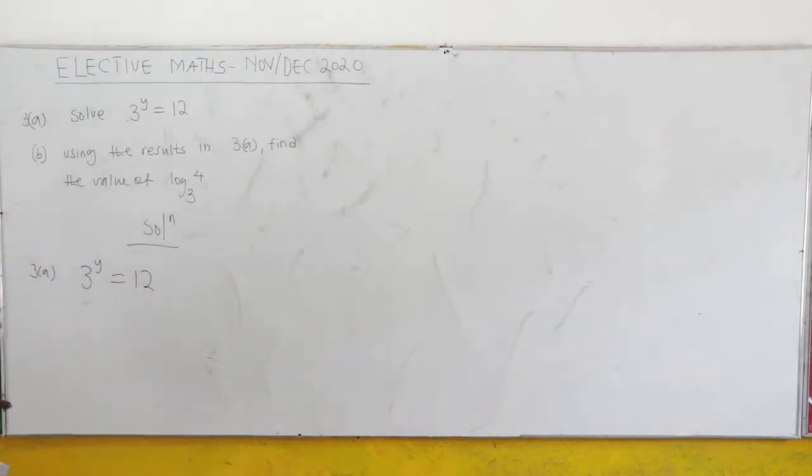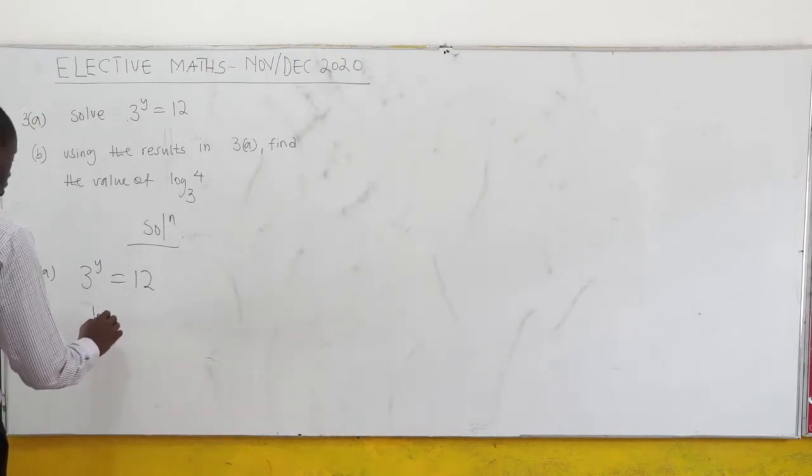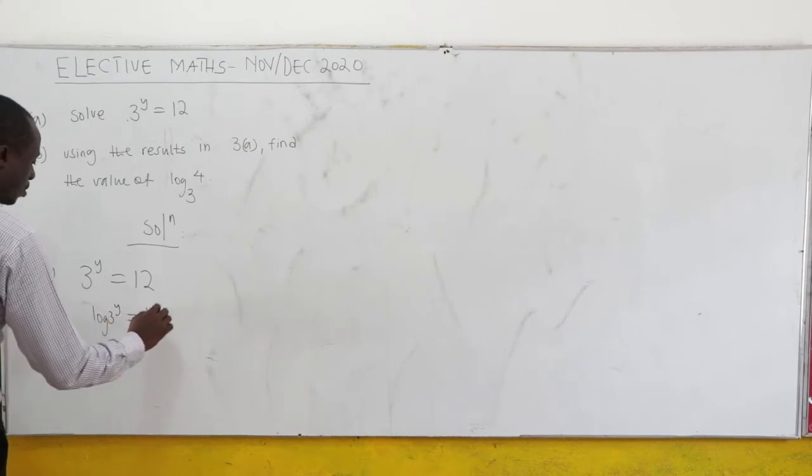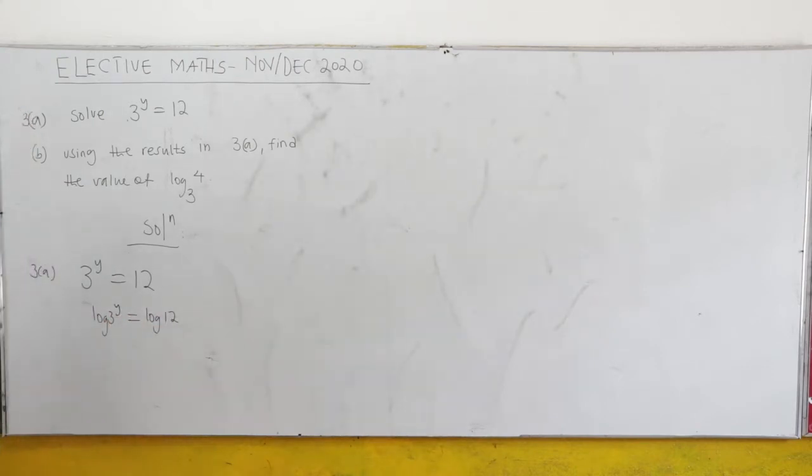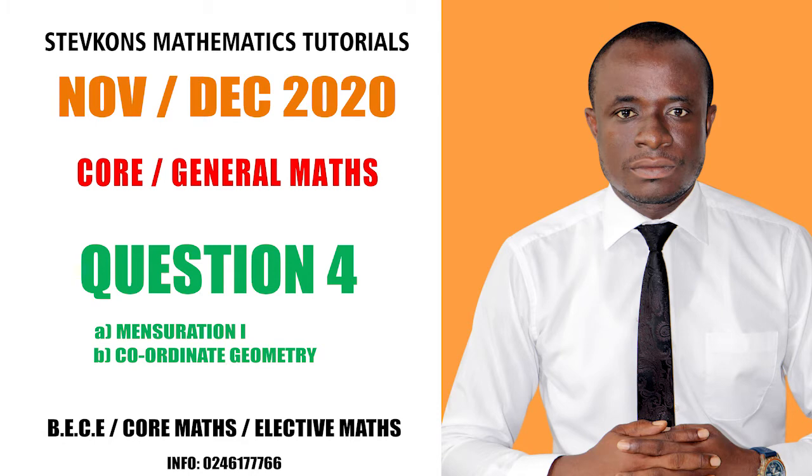In this case, we can't make the bases the same, so we have to take log of both sides. So we have log 3^y equals log 12. Now applying the third law, so you have y log 3 equals log 12.